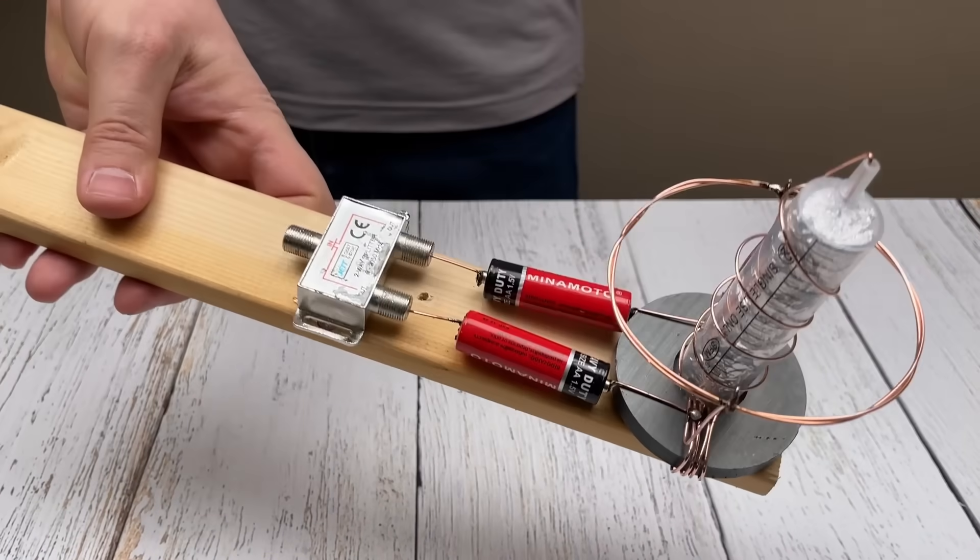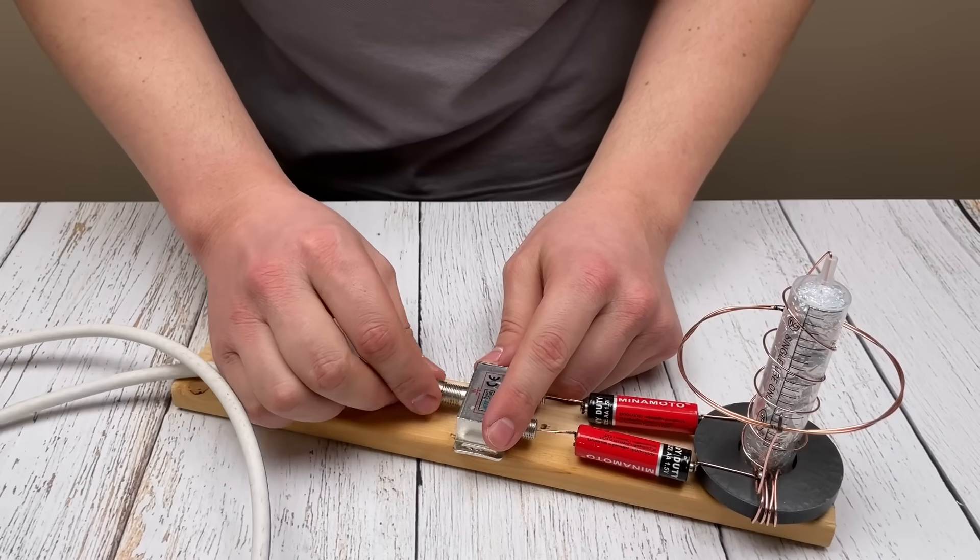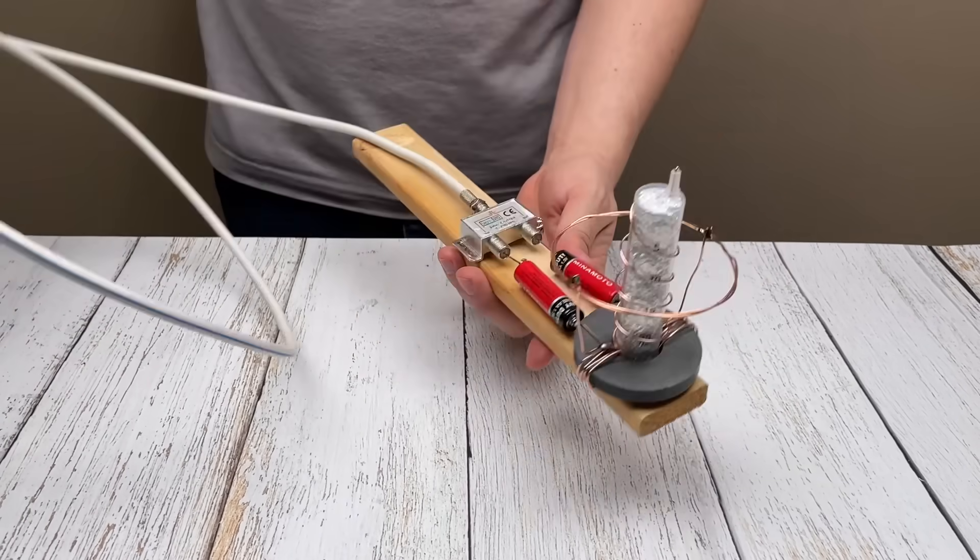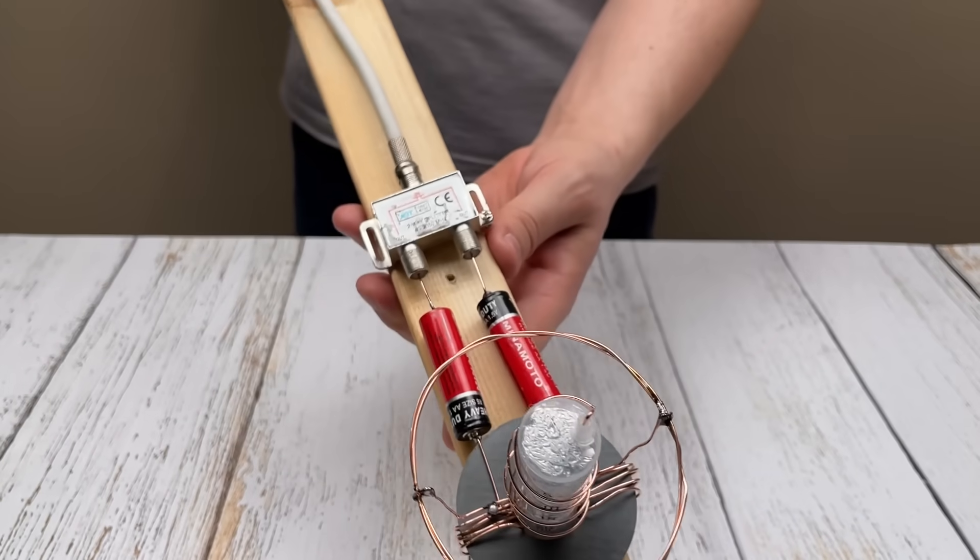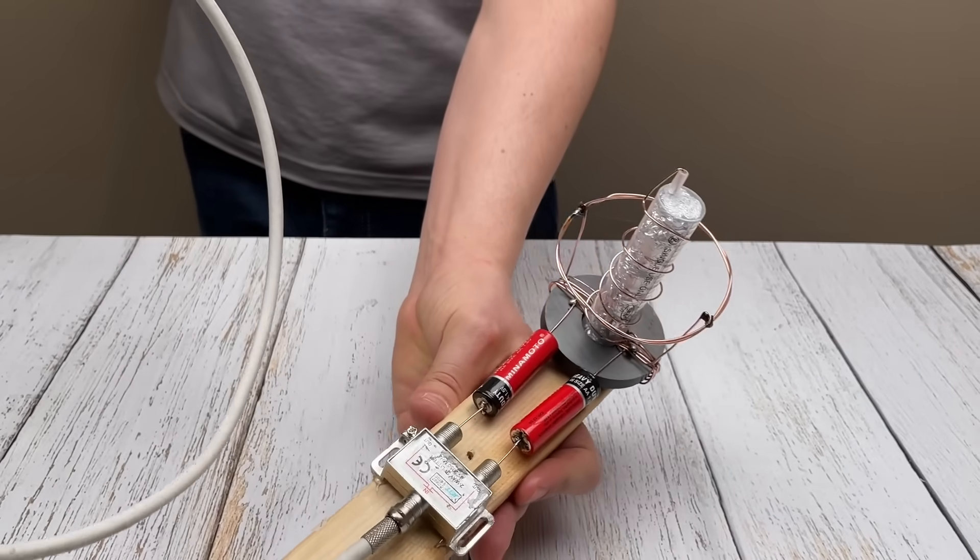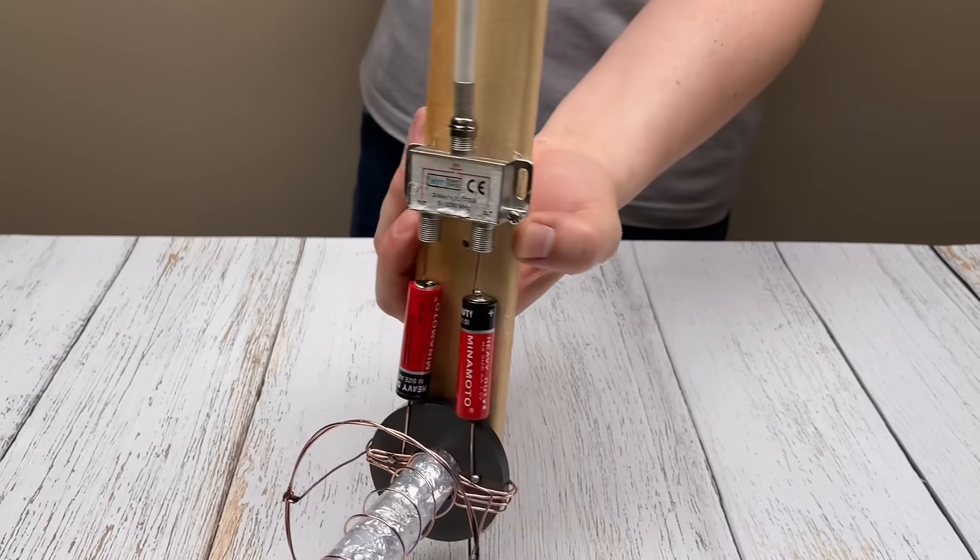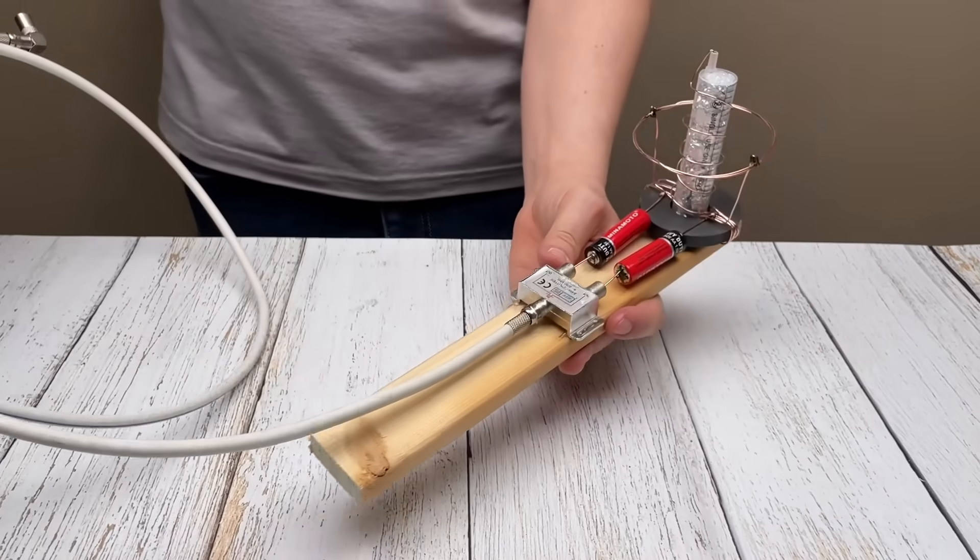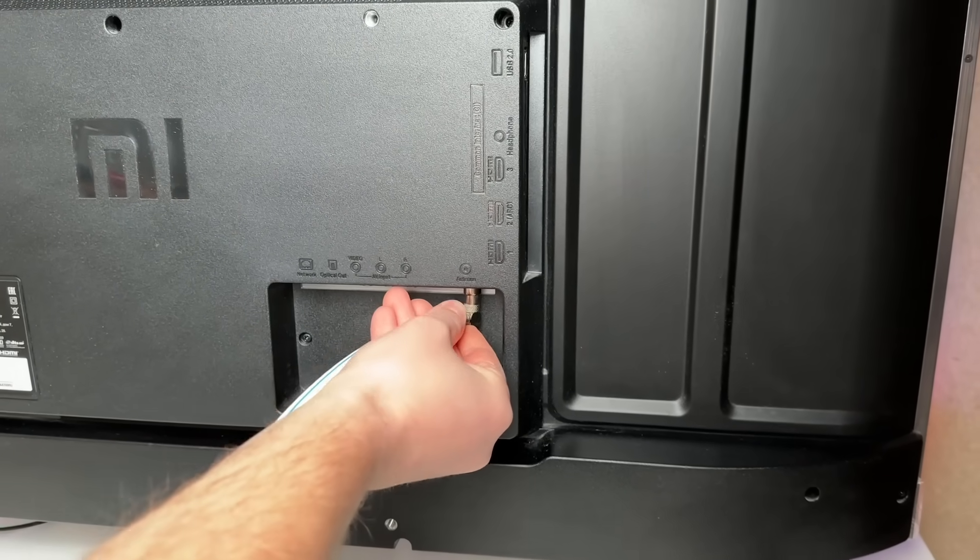Now our antenna is completely ready for use. You're probably wondering why such a simple design could work. The answer is simple: copper wire wound around a magnet creates a loop that can pick up electromagnetic signals transmitted by television transmitters. A syringe with foil further enhances the signal, and connecting to batteries allows you to power the antenna and transmit the signal to the TV using an antenna splitter.